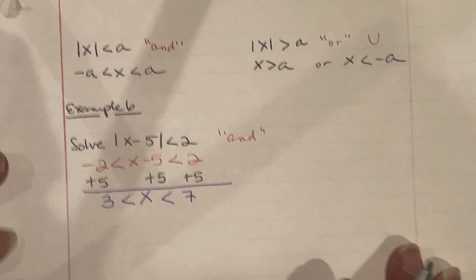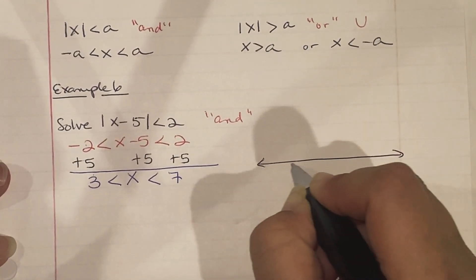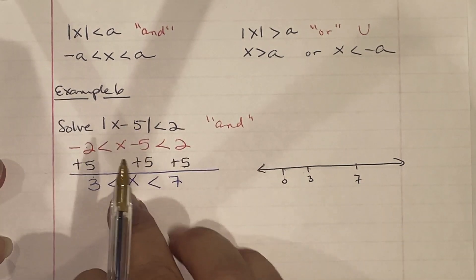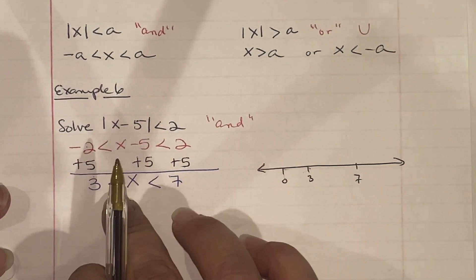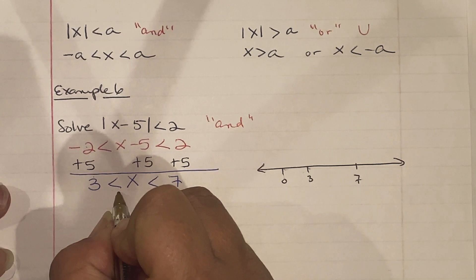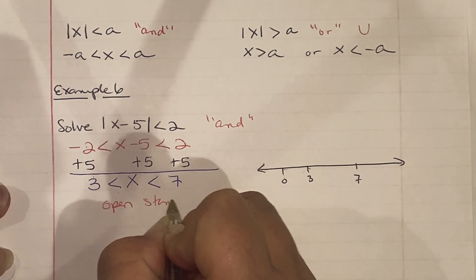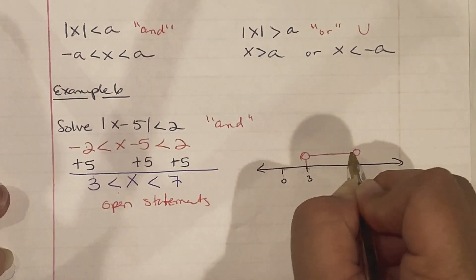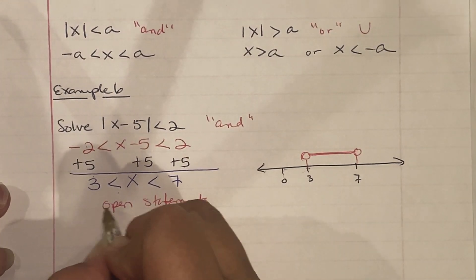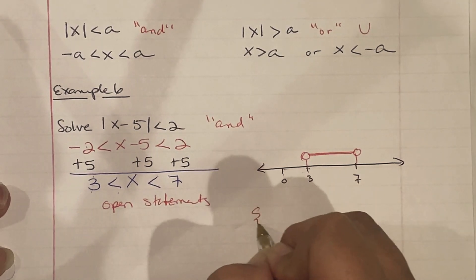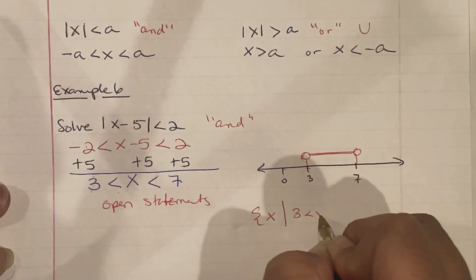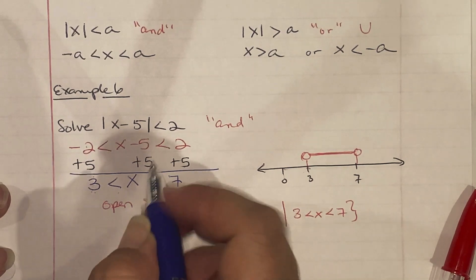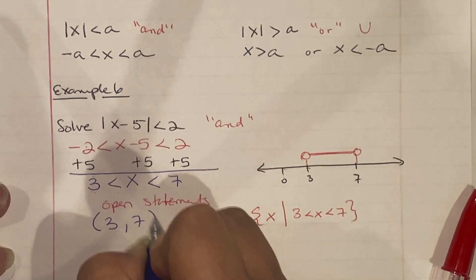Looking at the number line with 0, 3, and 7 marked: since the inequalities are strict (no 'equal to'), these are open statements — open circles at 3 and 7, connected between the two. In set builder notation: {x | 3 < x < 7}. In interval notation, we use parentheses since they're open statements: (3, 7).